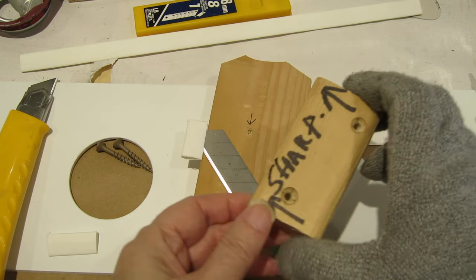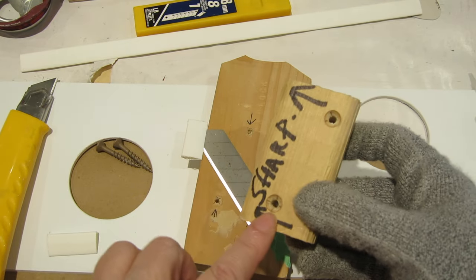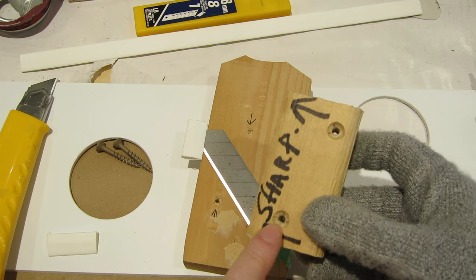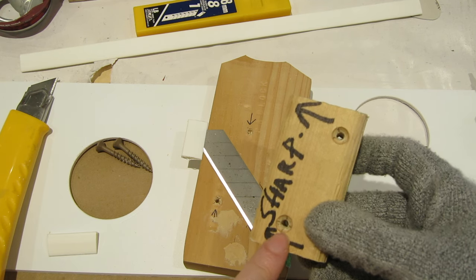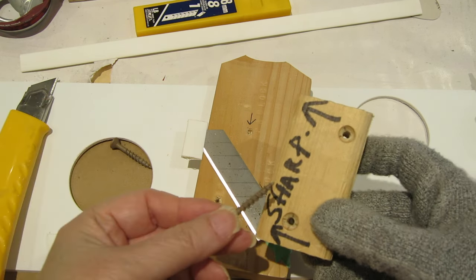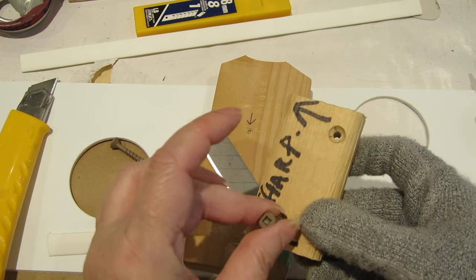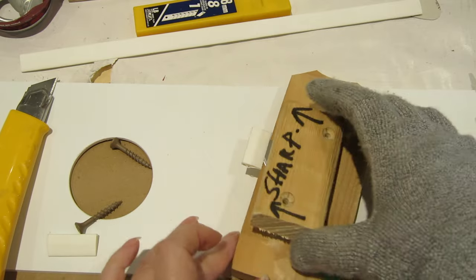Once you cut your pieces, you're going to want to drill two holes where it's indicated and you're going to want to countersink it. What you're going to do is drill a hole that's larger than the dimension of your screw, and that's because you want it to be able to slip through the top easily.